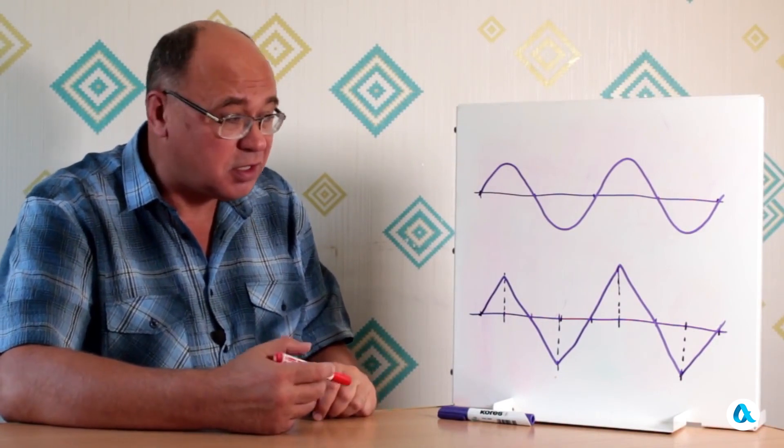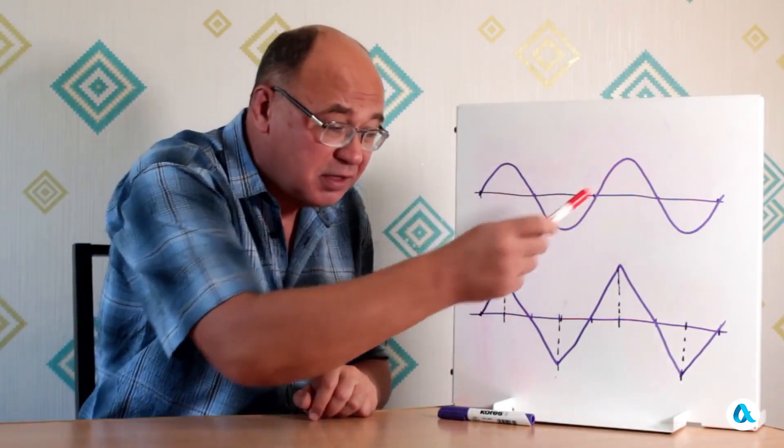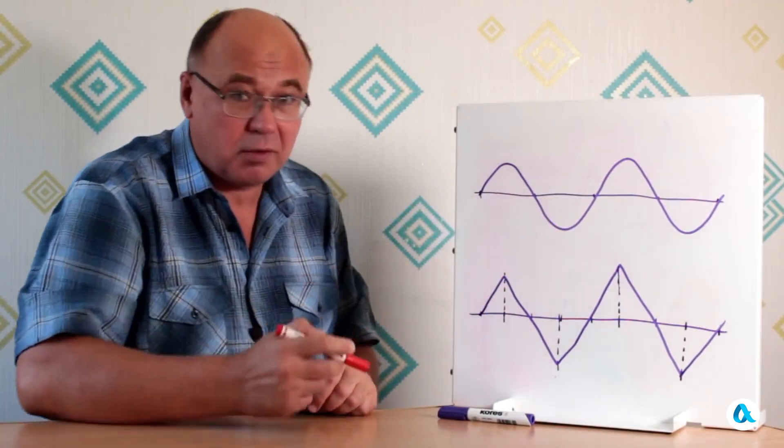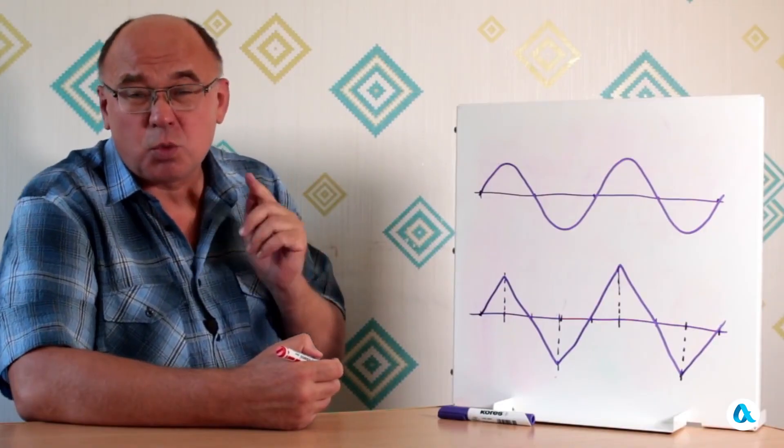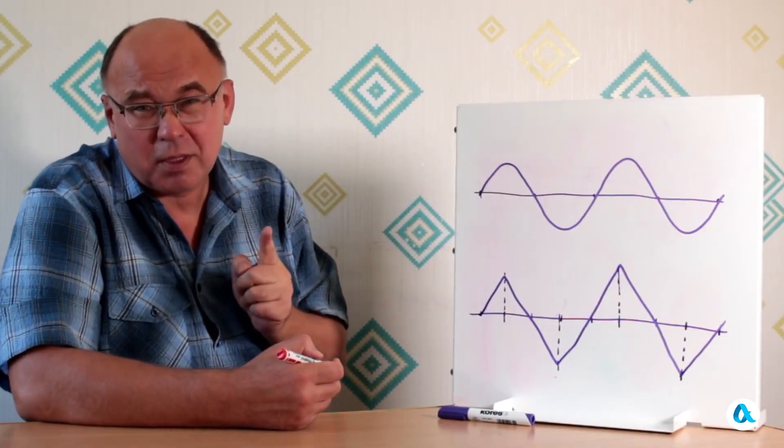What helped us in our reasoning was switching from a sinusoidal signal to a sawtooth wave. Let's draw what the current would look like if there were only a capacitor in this part of the circuit.